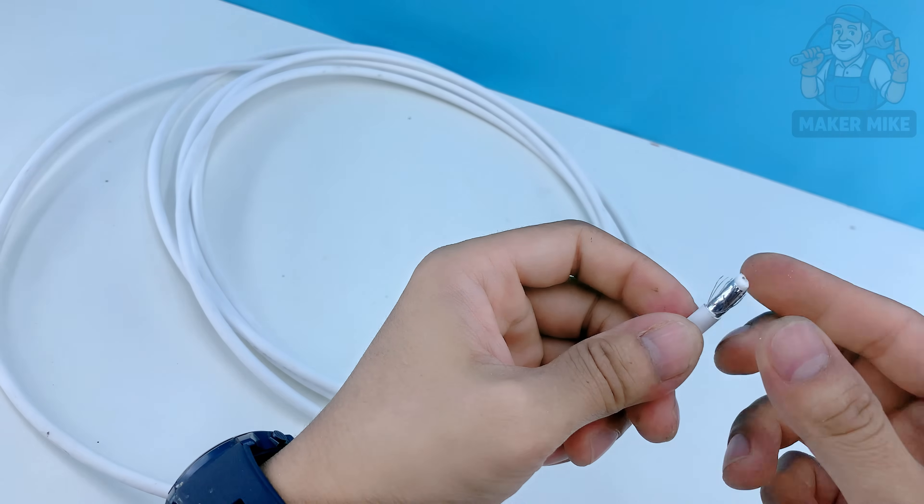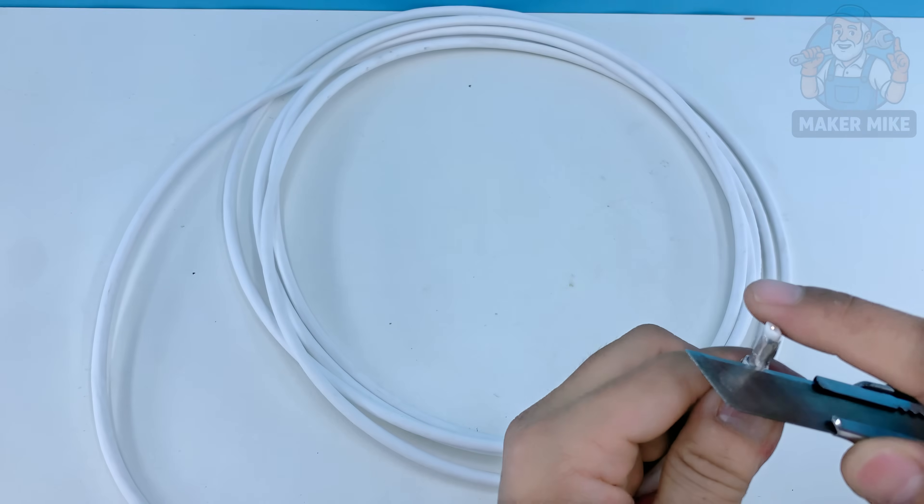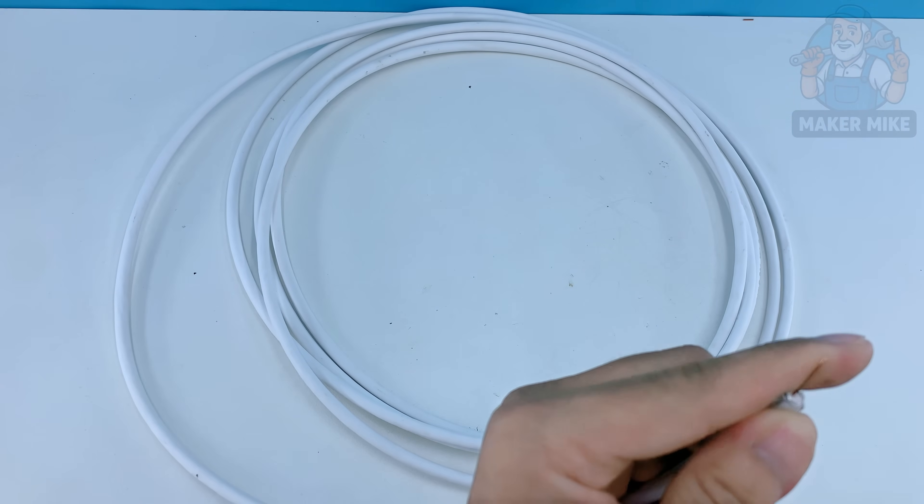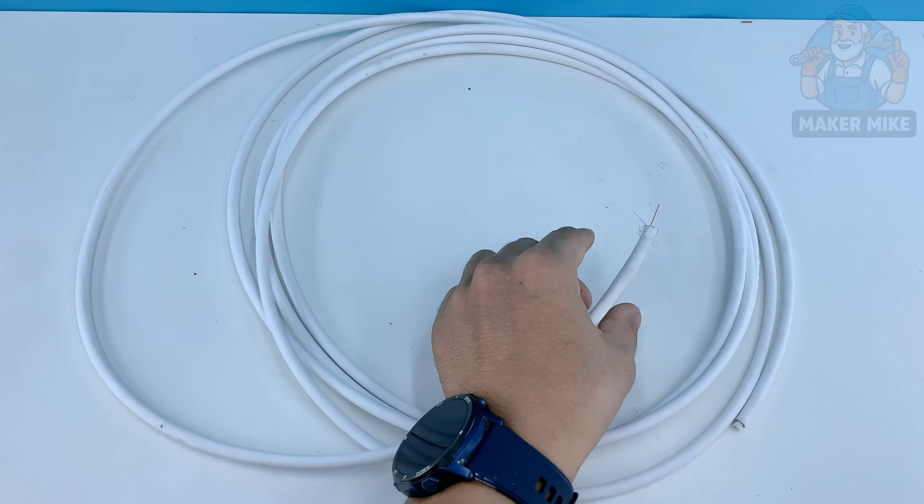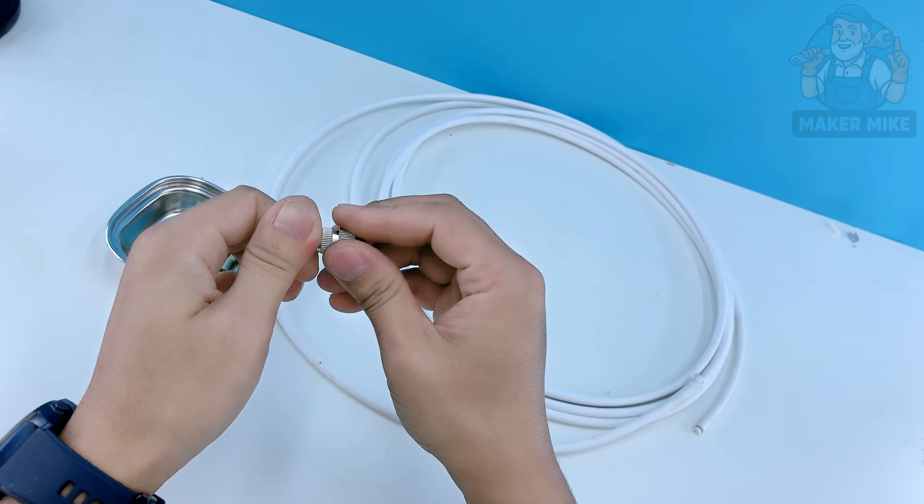Next strip about an inch of the outer plastic layer on both ends of the cable. You'll see a layer of silver shielding twist it neatly to one side, then peel back the inner insulation to reveal the copper core in the middle. Be careful not to nick that copper wire. That's what carries your signal.